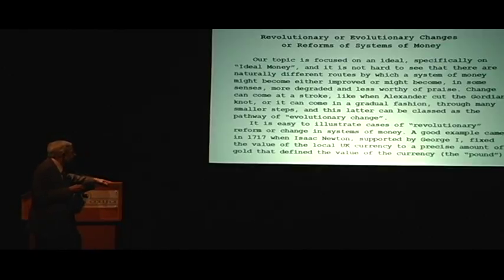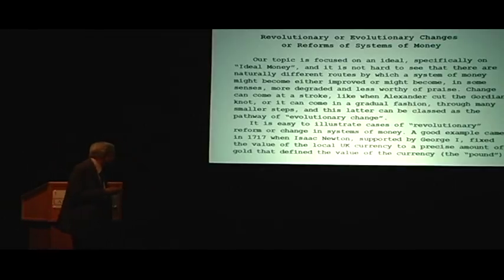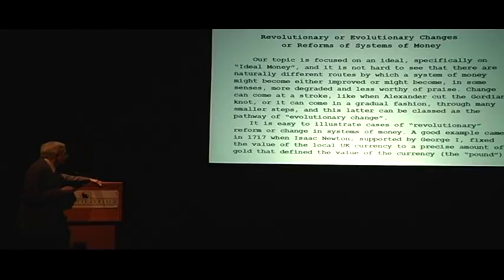It is easy to illustrate cases of revolutionary reform or change in systems of money. A good example came in 1717 when Isaac Newton - he had a long career, he was late in his life - he had then become master of the Mint, which is a higher level from his original position of warden of the Mint. Supported by George I, he fixed the value of the local UK currency, which has been called pound sterling, to a precise amount of gold that defined the value of the currency. See, as the pound, it's a pound sterling of silver, not gold. But Newton linked it to gold.